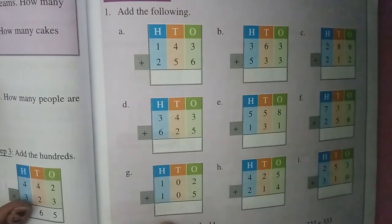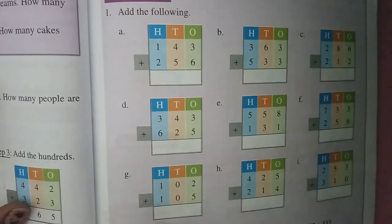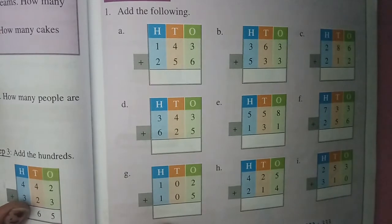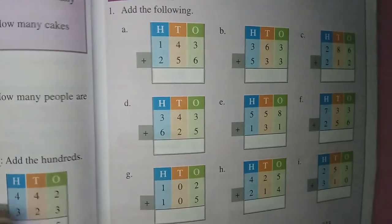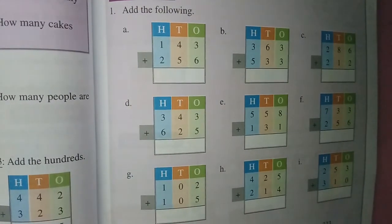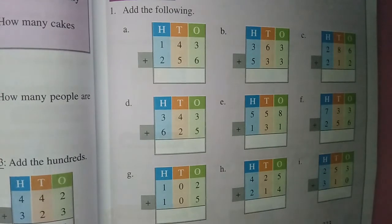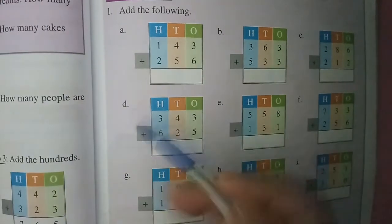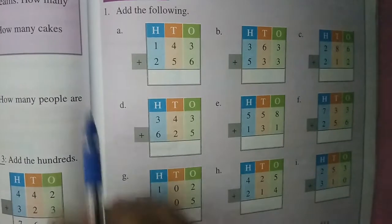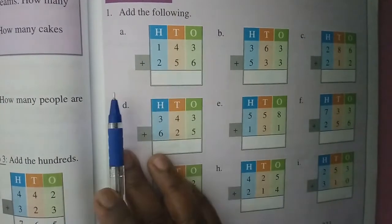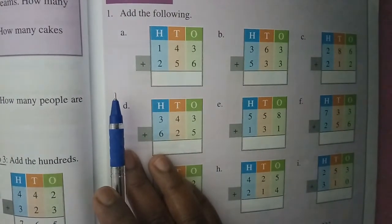This is second standard maths class and the chapter we are doing is addition and subtraction. In the previous class we learnt about addition of two digits with two rows, and today we have three digit numbers what we are going to learn today.